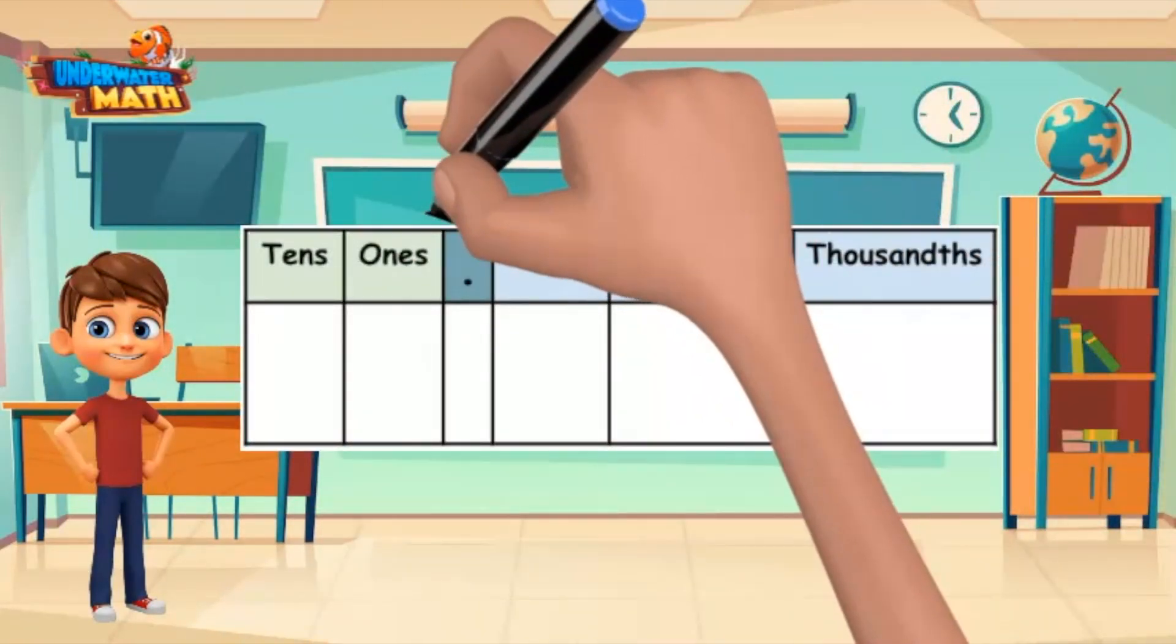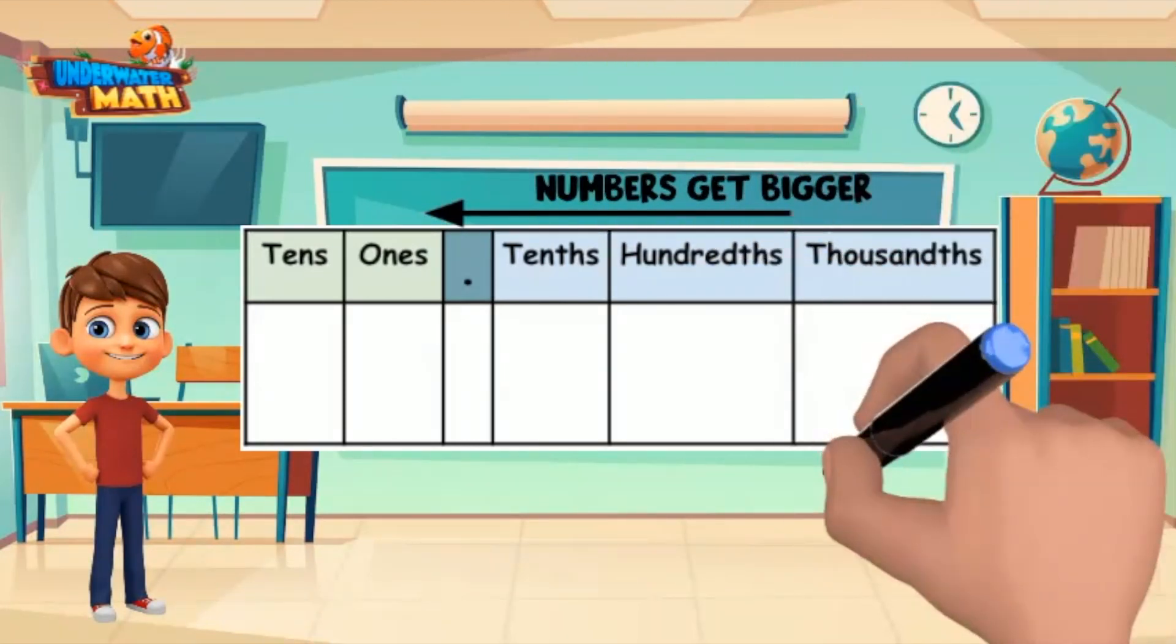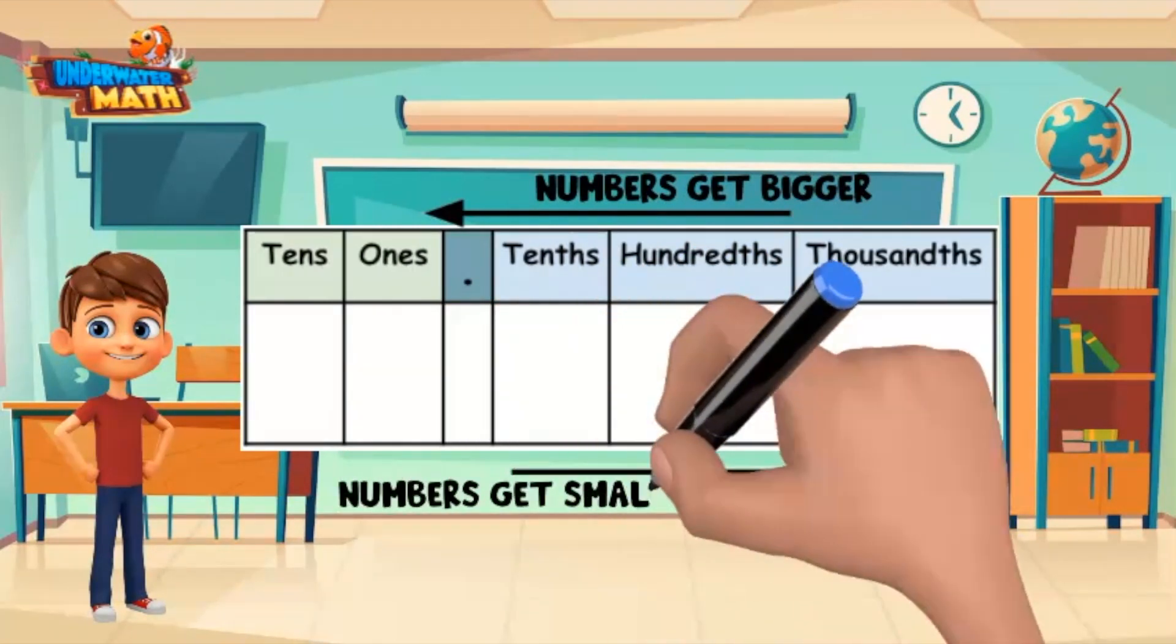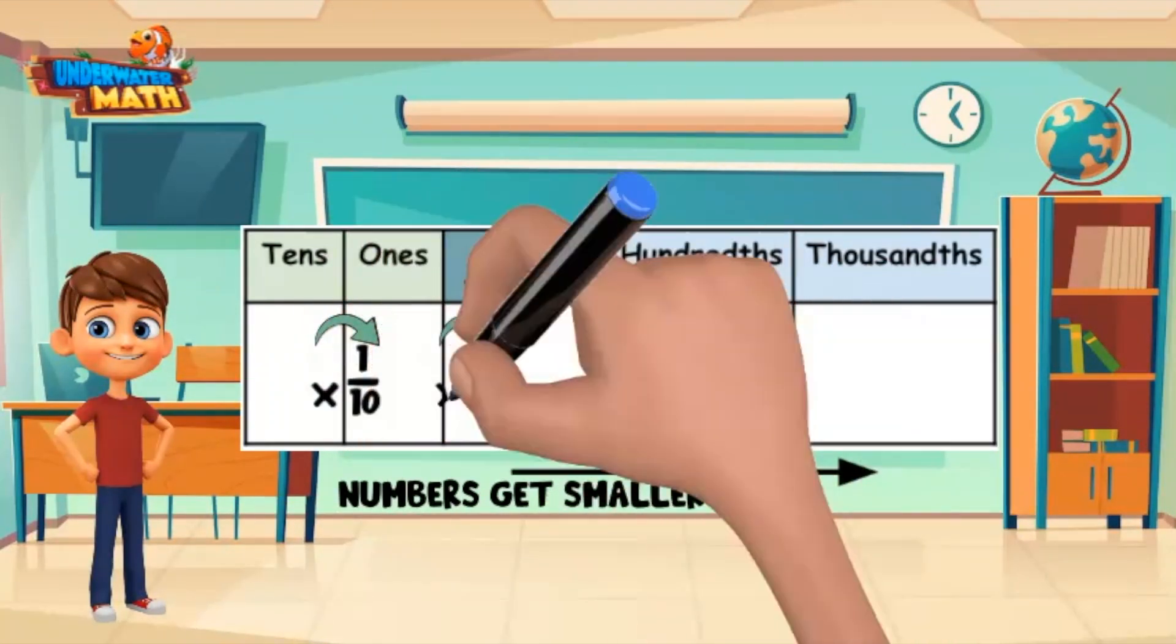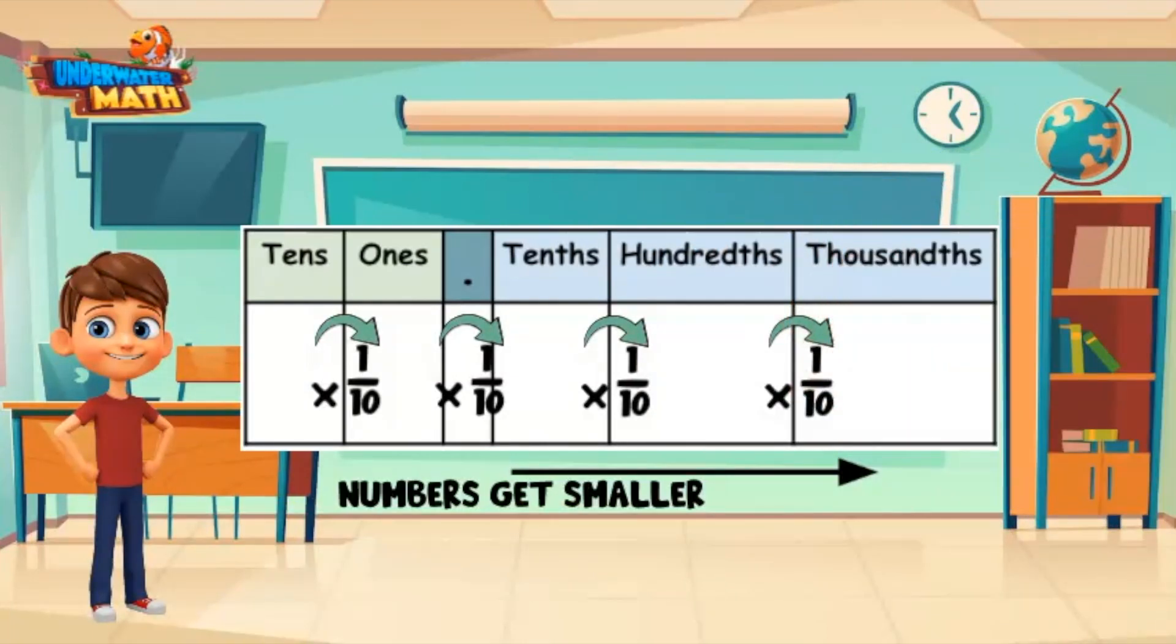When you move to the left on the place value chart, your numbers get 10 times bigger with each column. When you move to the right, your numbers get 10 times smaller with each column. This is helpful because moving from one column to the next means you are multiplying by one-tenth. Let's try it out.